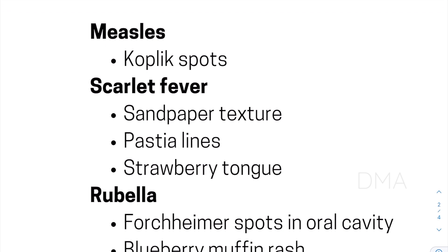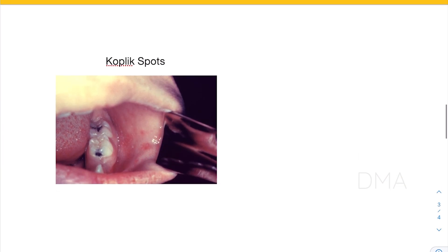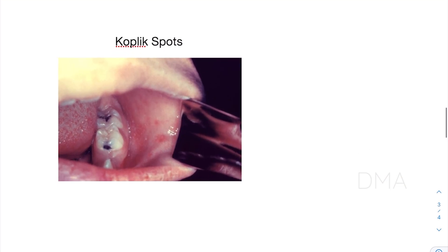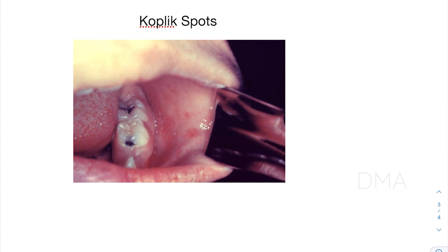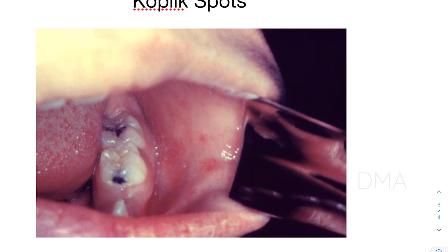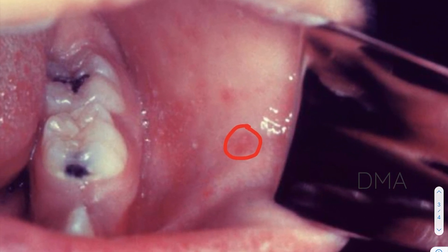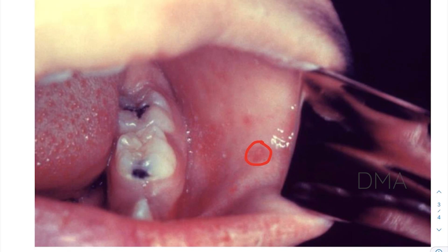Firstly, there is measles. In the case of measles there will be Koplik spots. Koplik spots are white spots with a red ring around them, found inside the cheek. That's how Koplik spots look, and they can be seen in measles.